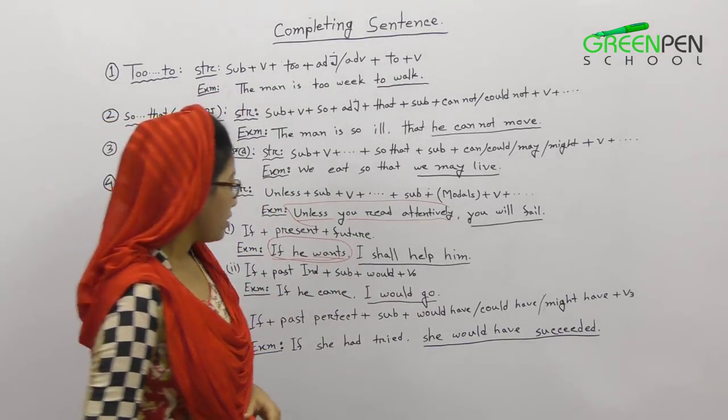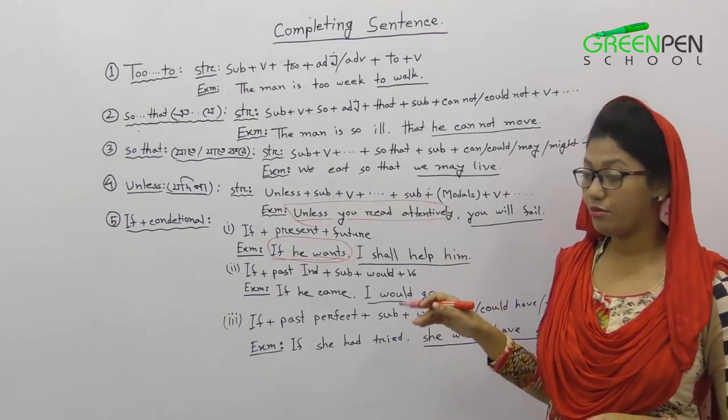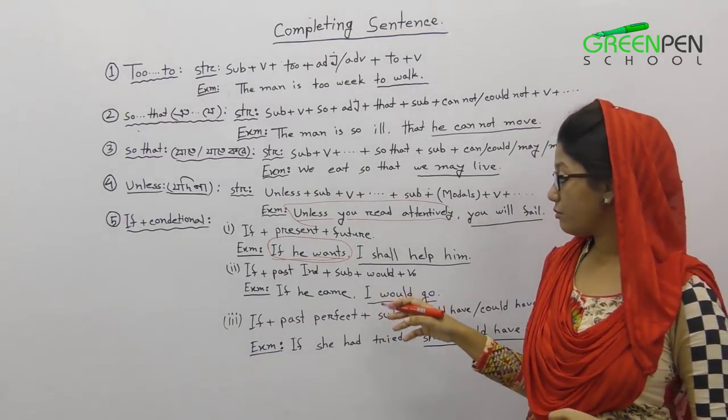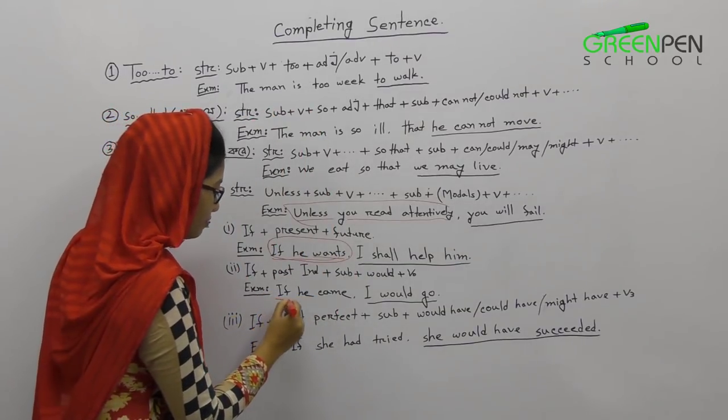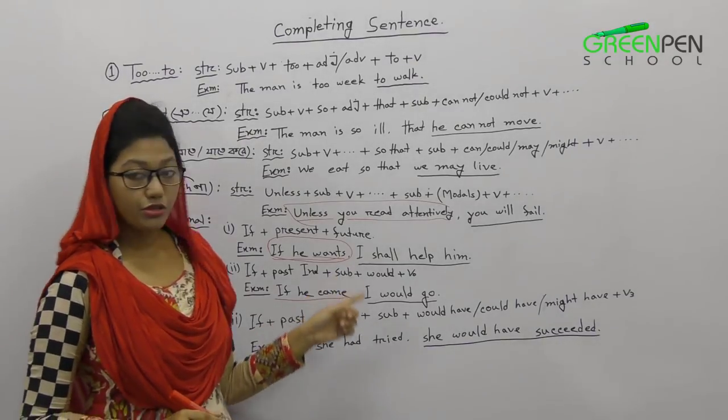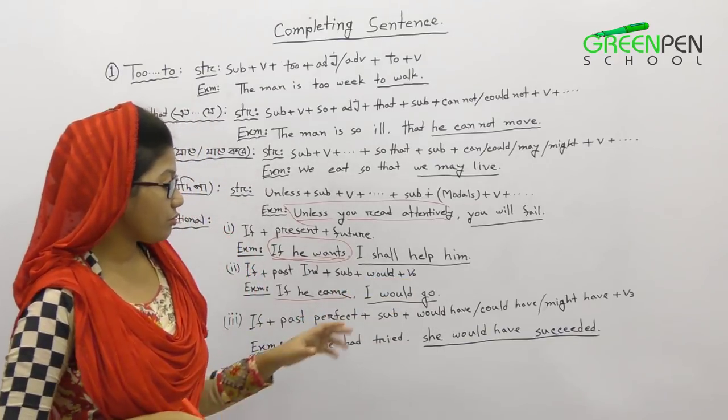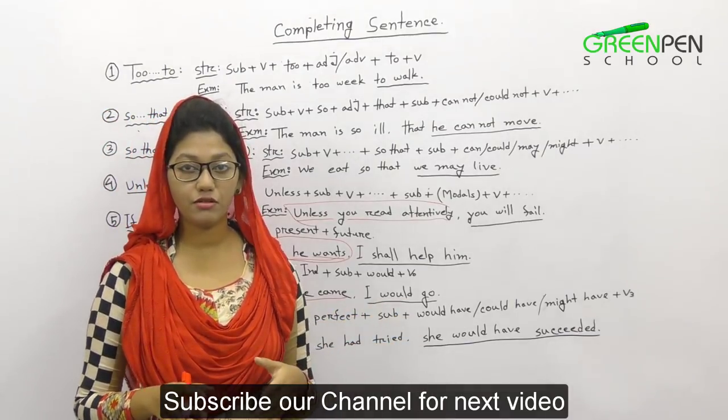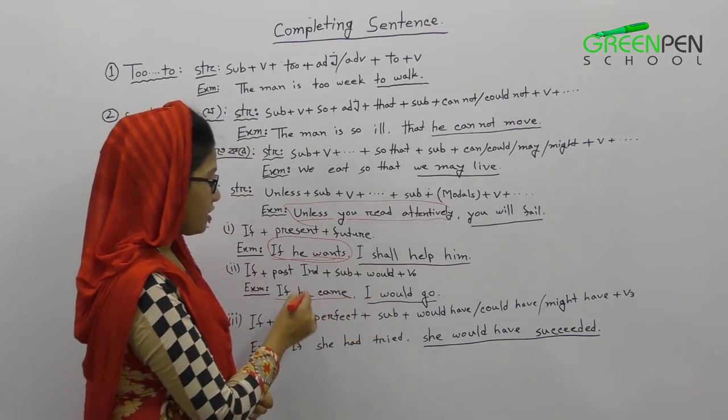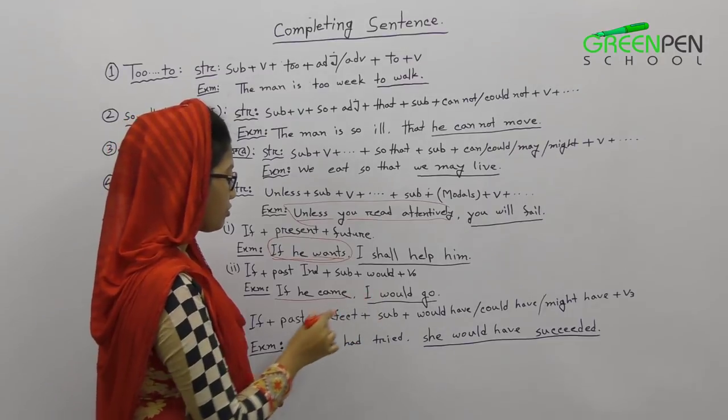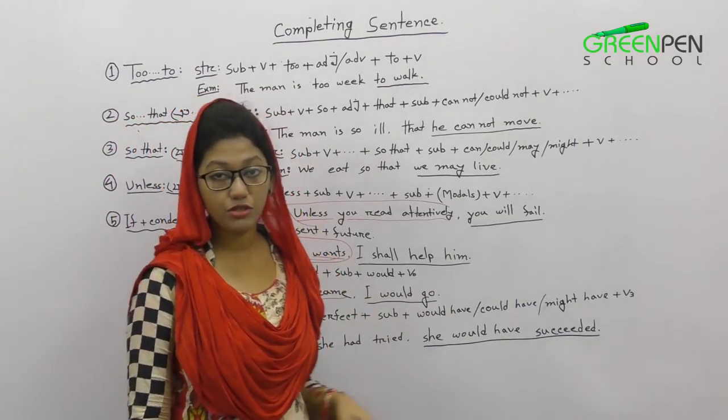Second conditional is if plus past indefinite tense, subject would or might plus base form. The structure will use past indefinite tense: if he came. The question is if he came is past indefinite tense. The subject position is subject. Would or might, the base form is go. In this case, the subject will go. If he came, we can see the past indefinite tense. The subject would go with the base form. This is the second condition.